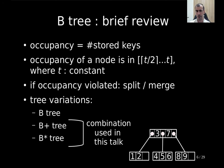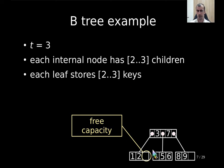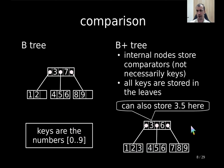To give a concrete example, here we have a B-tree with t equal to three, which means that the internal nodes have two or three children and the leaves have two or three keys. You can see that you often have free capacity — like here, you can still store an additional key.